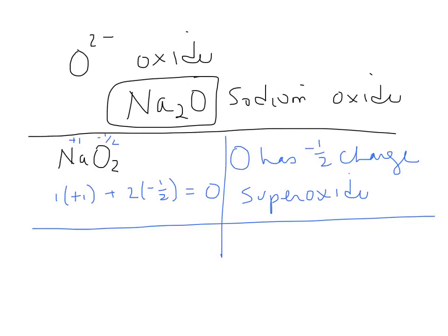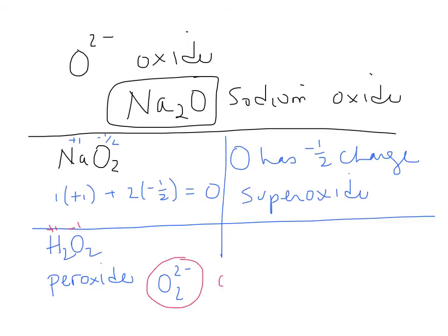Then there's H₂O₂ — hydrogen peroxide. The ion O₂²⁻ is the peroxide ion. Each hydrogen is +1, so each oxygen must be −1. Two oxygens give O₂²⁻ overall, or you could say each oxygen is O⁻¹. Peroxide has a −1 charge per oxygen.